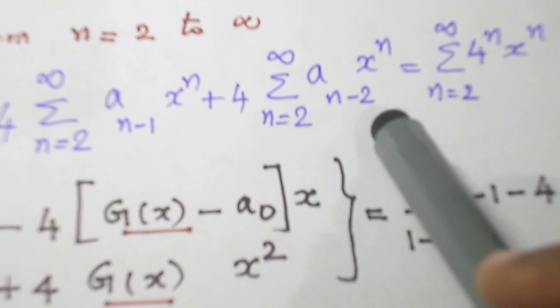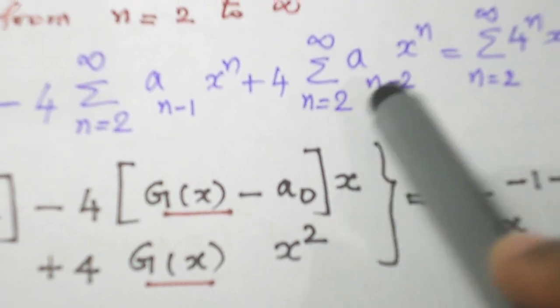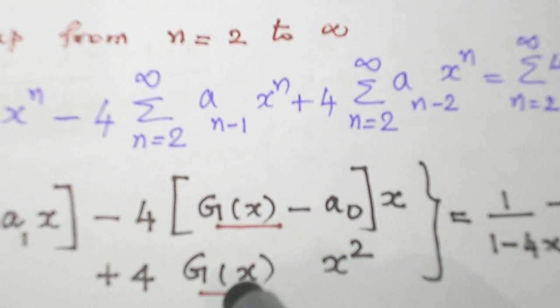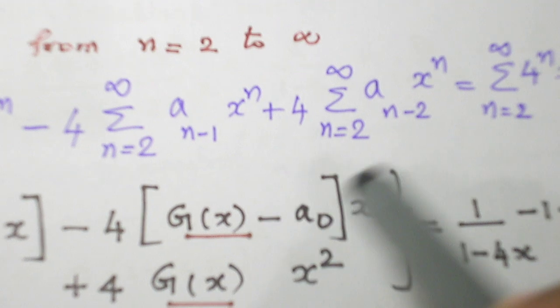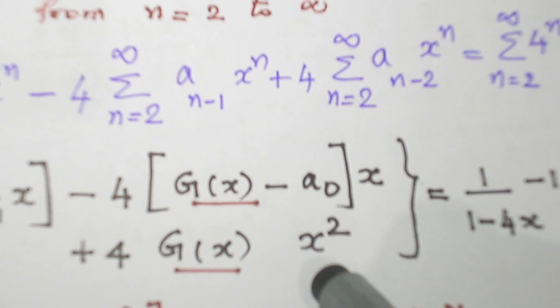Plus, look at these two terms. n = 2 and here also n minus 2. So the difference between 2 and 2 is 0. So you need not subtract any term. Just G(x) as it is. And this 2, you bring it to the power of x. So I will get x^2 here.